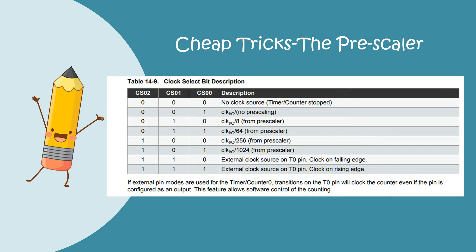Here are details from Atmel's datasheet on the microcontroller AT328P. This says that to maintain a pre-scaler value of 8, you need to maintain the bits as 0, 1, 0. For 64, it needs to be 0, 1, 1 and so on. This is going to be our guidance for setting the bit values to get the desired value of pre-scaler that we want.